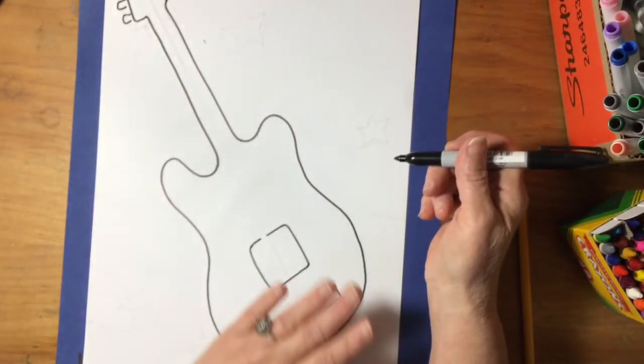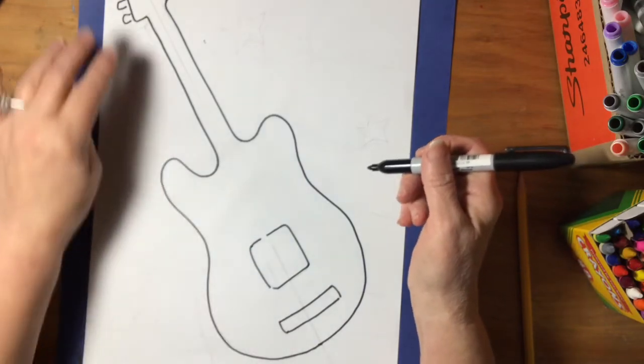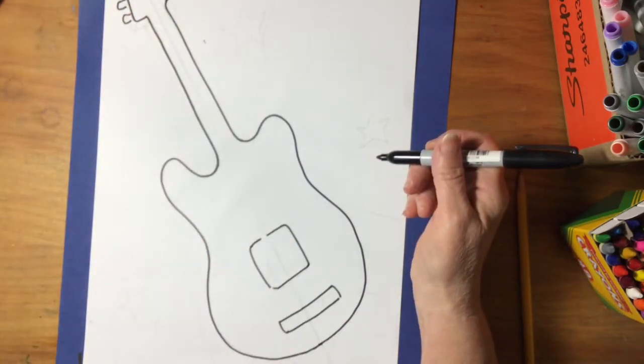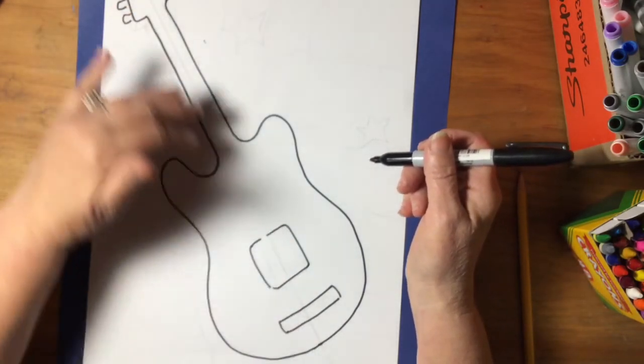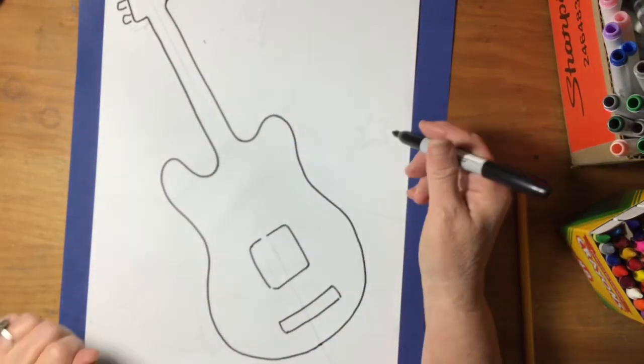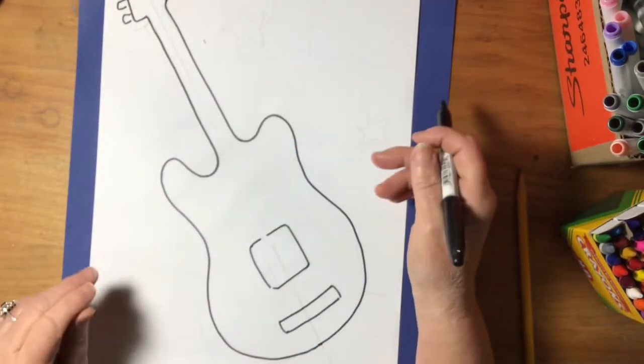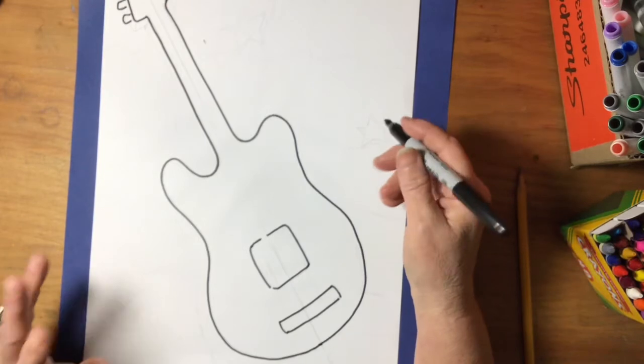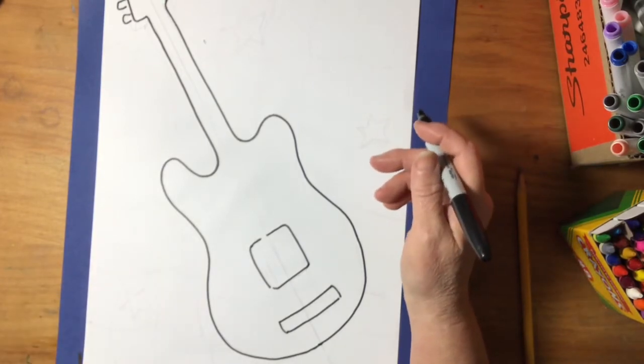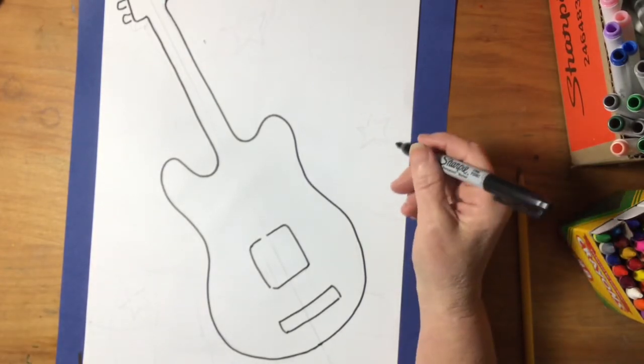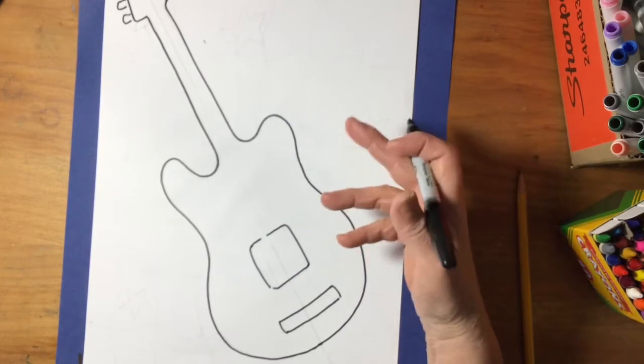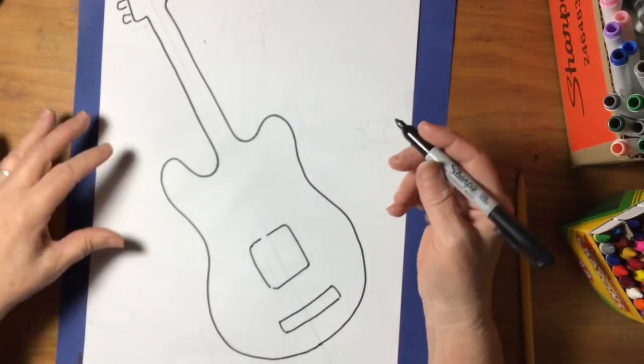So this is my basic guitar shape and that diagonal line was right in the center and it helps me keep it lined up. Now you might have to try this a couple of times to get it the way you want. Don't be afraid to do that. That's what artists do. You try it a couple times and then you go with the one that you think looks the best.